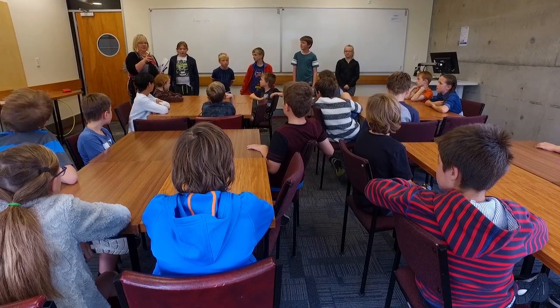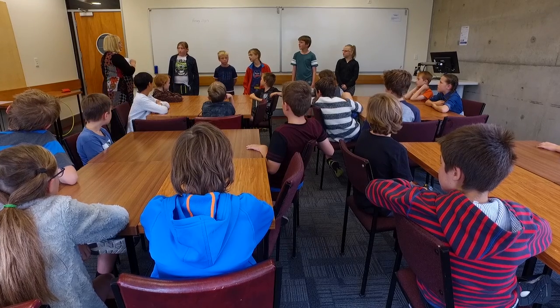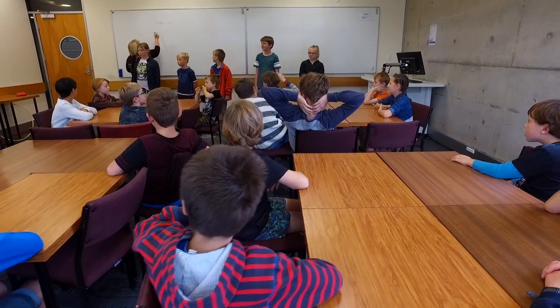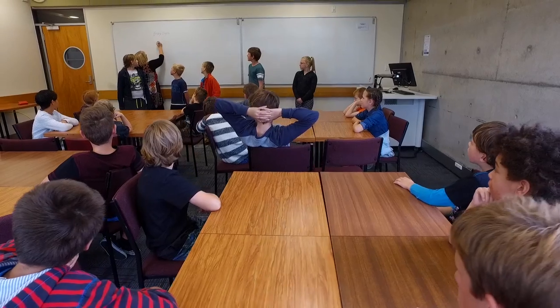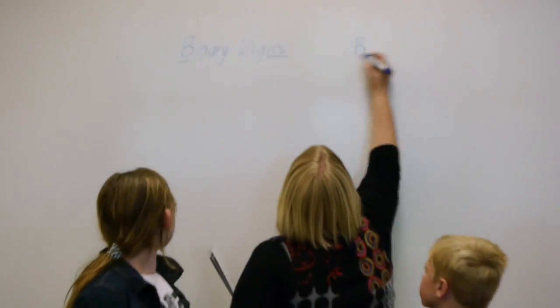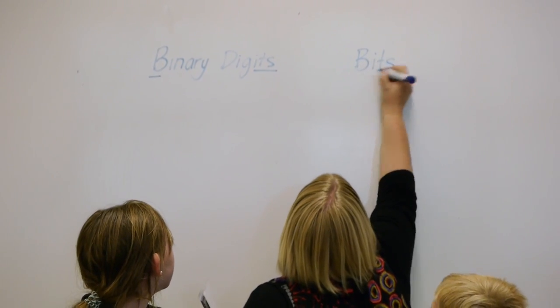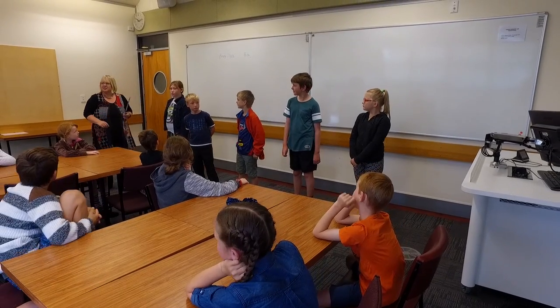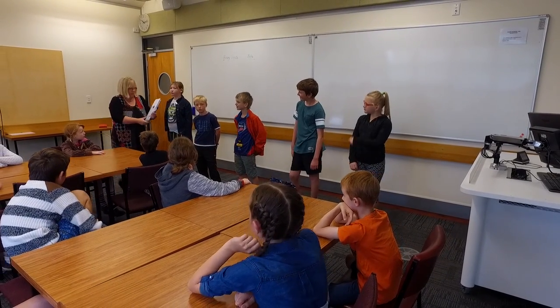Today we're going to learn about binary digits. Hands up if you've heard of a thing called a bit in a computer. A bit comes from binary digits — we take the first letter of 'binary' and add the last bit of 'digit' and shorten it to 'bits.' So right now we've got five bits just standing up here.